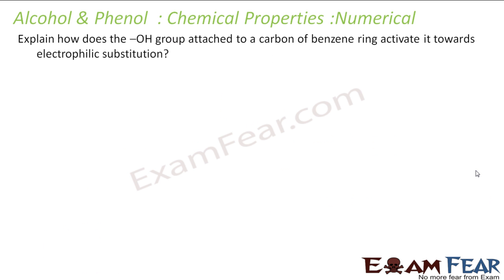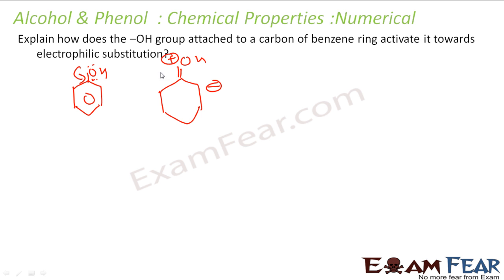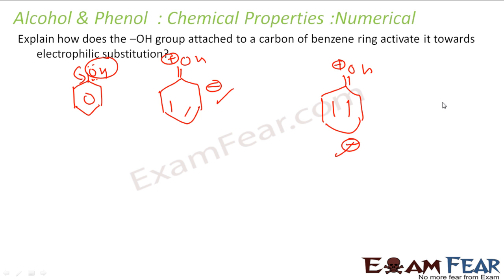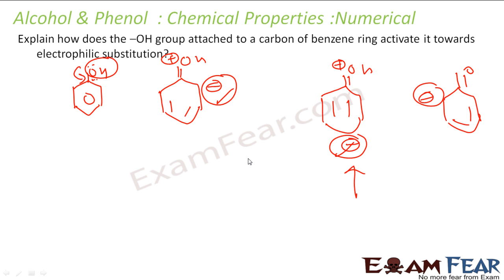The next question: how does the OH group attached to benzene activate the ring toward electrophilic substitution? The OH group has lone pairs, so drawing its resonance structures gives negative electron density at the ortho and para positions. Because electron density is higher at these positions, they are susceptible to attack by electrophiles.